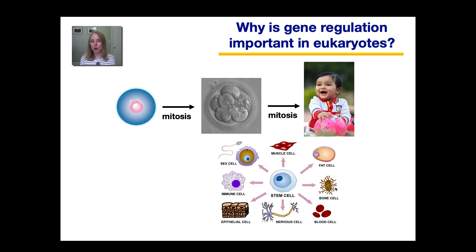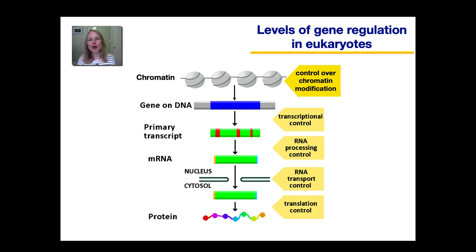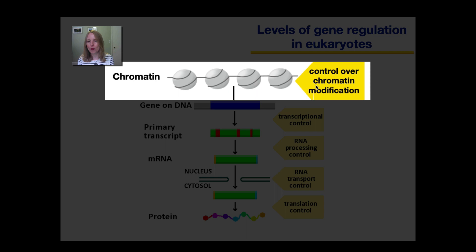Gene regulation is so important that eukaryotes have multiple ways of doing it. Eukaryotes can control chromatin modification, there's control over transcription, controls over RNA processing, RNA transport, regulation of translation, and other ways not even pictured in this diagram. But in this lesson we will focus on this first level: control over chromatin modification and chromatin packaging.